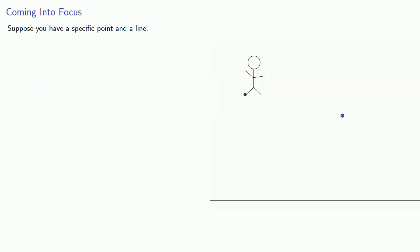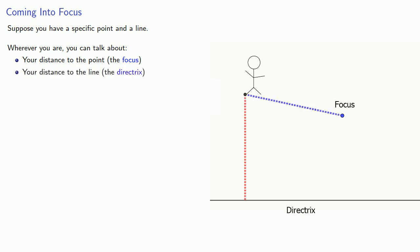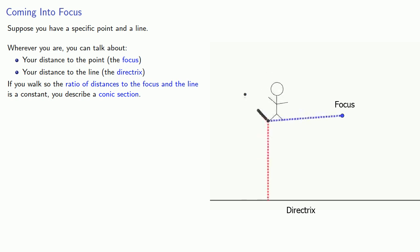Suppose you have a specific point and a line. Wherever you are, you can talk about your distance to the point, which we'll call the focus, and your distance to the line, which we'll call the directrix. Now, if you walk so the ratio of the distances to the focus and the line is a constant, you describe what's called a conic section.